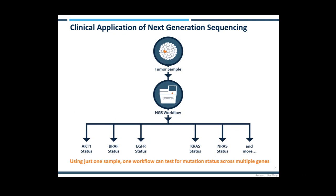One of the areas we at Horizon are actively focusing on is next-generation sequencing. One of the main reasons this technique is becoming increasingly popular in clinical diagnostics is that it allows you to take one tumour sample, carry out your assay, and have a full picture characterizing it for an array of different genotype tests in one go — a massive improvement from even a few years ago when you would have to prioritize genes and then analyse whether subsequent tests were needed.